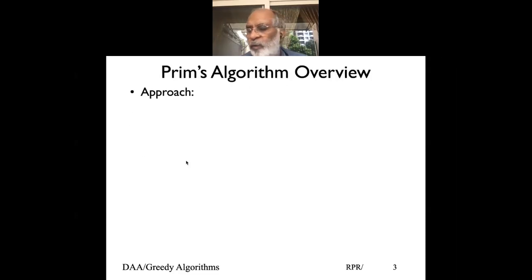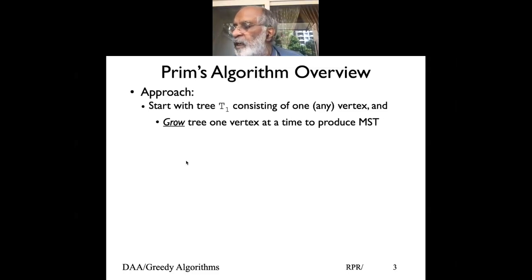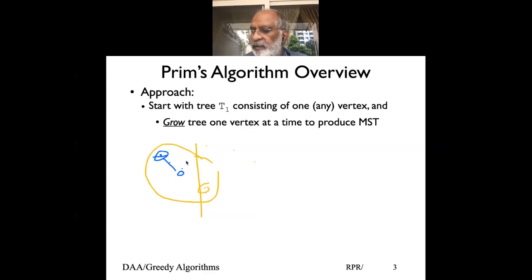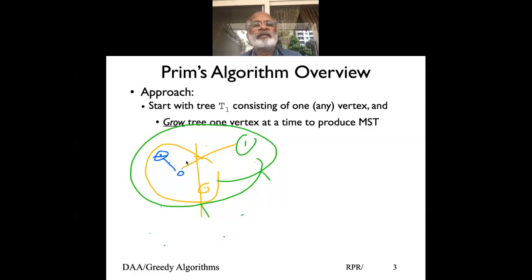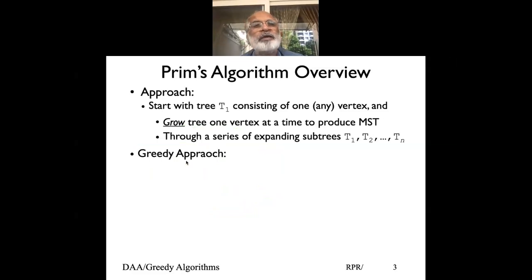Just for a review, essentially what we were doing in Prim's algorithm is that we were starting with one node, making it part of a tree, and then growing that tree one node at a time. We had a given tree, and once we had a given tree, we start with one node, add another node, this becomes a tree. Then we look at whichever node is closest to this tree, add another node, the whole thing becomes a tree. So essentially we were growing the minimum cost spanning tree one node at a time, and that was primarily Prim's algorithm.